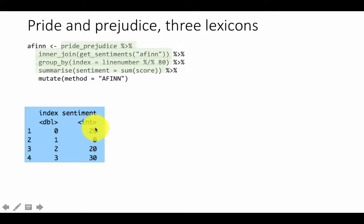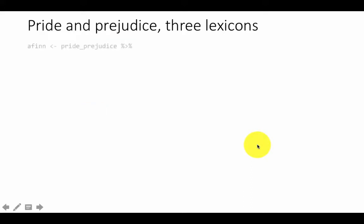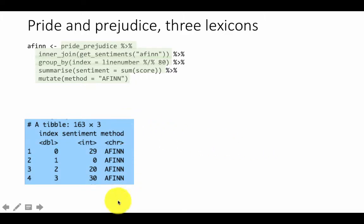Then we simply add one more column to say the method is AFINN. So AFINN gives us the complete sentiment analysis using the AFINN lexicon for Pride and Prejudice. Going by our goals, we now need to do the same sentiment analysis for the remaining two lexicons — NRC and Bing.